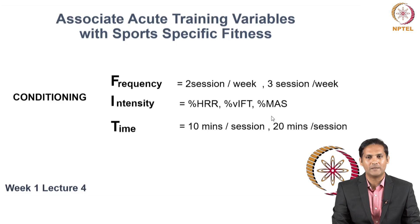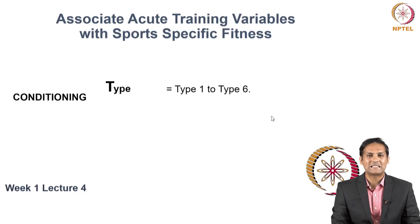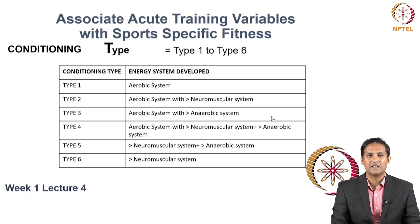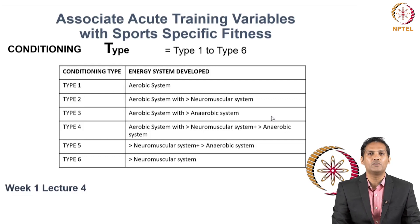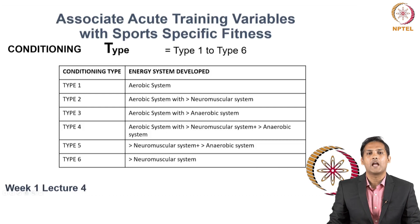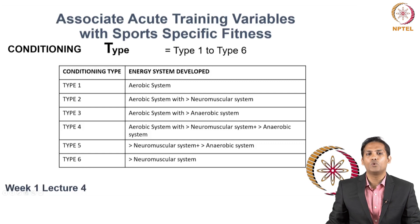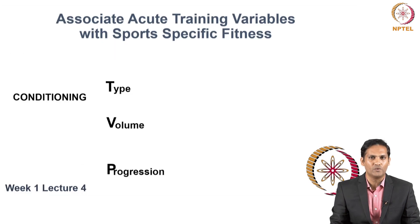The duration of a conditioning drill can be a 10-minute session or 20-minute session. When it comes to the types of conditioning, there are 6 types. Type 1 emphasizes developing the aerobic system. Type 2 develops the aerobic system but with more emphasis on developing the neuromuscular system. Type 3 develops the aerobic system but with greater emphasis on developing the anaerobic system. Type 4 develops the aerobic system with much more emphasis on both the neuromuscular and anaerobic systems. Type 5 does not focus on improving the aerobic system but focuses on improving the neuromuscular and anaerobic systems. Type 6 aims to develop only the neuromuscular system. These are the types of conditioning you try to improve in an overall conditioning phase.